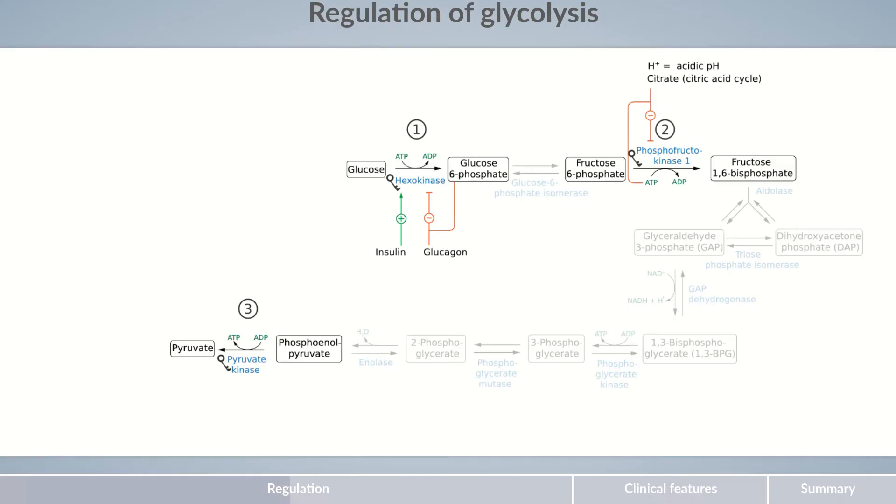Therefore, citrate inhibits phosphofructokinase-1. The third factor is an elevated proton concentration, or in other words, an acidic pH. The pH decreases, especially during the downstream anaerobic metabolism of pyruvate. To prevent extreme and potentially cell-damaging decreases, the glycolytic production of pyruvate is inhibited at a low pH.